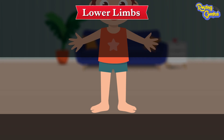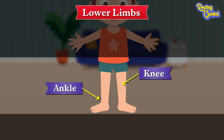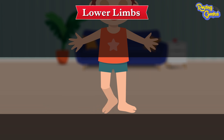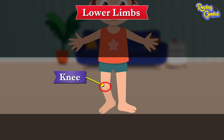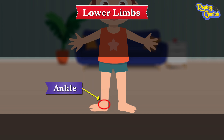We can find our knee, ankle, feet and toes on our leg. Our knee is a joint and we can bend our leg with it. Our ankle is a joint that connects our leg and foot.